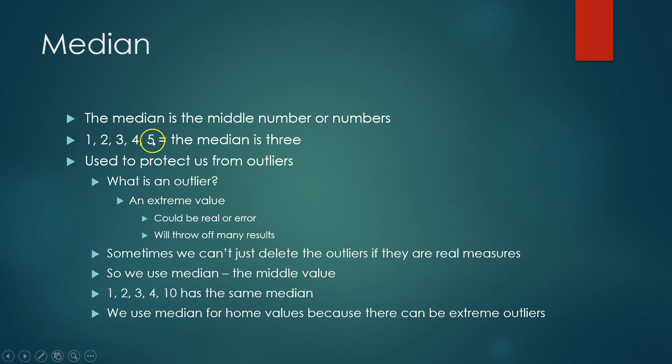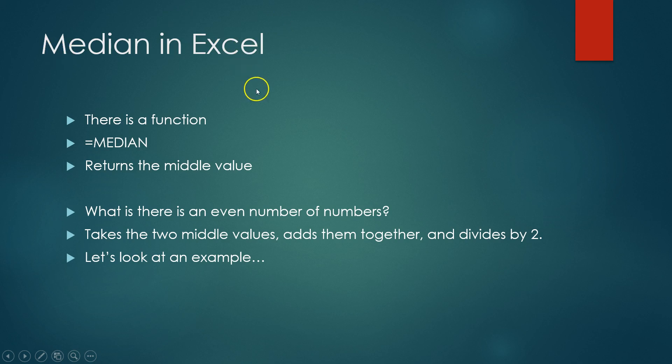So in the example that we use up here, 1, 2, 3, 4, 5, the median is 3. In an example that I have down here, 1, 2, 3, 4, 10, the median is still 3. And you can see how this outlier of 10 did not throw off our actual calculation of median. We have another example is we use median for home values because there could be extreme outliers. So in the Seattle area there are some very, very expensive homes. And so oftentimes when your home value is reported, they will use median home value because that's basically the middle of the range. And those that are multimillion dollar homes are not having such an impact as if we were to be using mean. There is a median function in Excel and it is called equal sign median. And it will return the middle value.